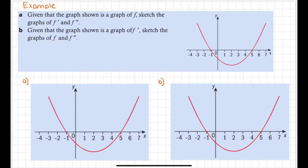The first thing we need to notice is that at this original function, the minimum is when x equals 2. At a minimum, the gradient at that point is 0, which means that point on our first derivative will be on the x-intercept. So any maximum and minimum points will move for our derivative graph to the x-axis.